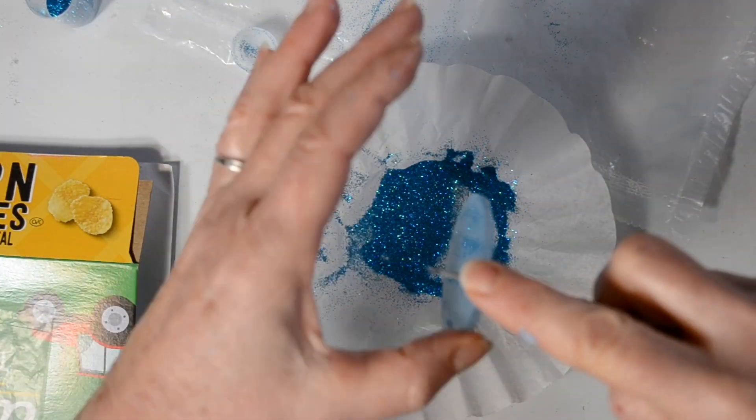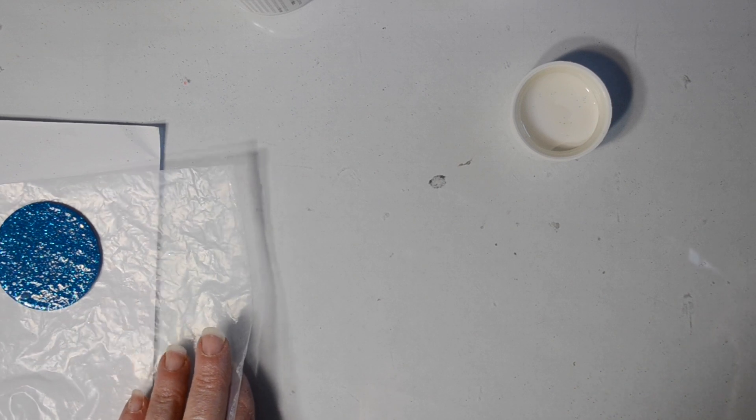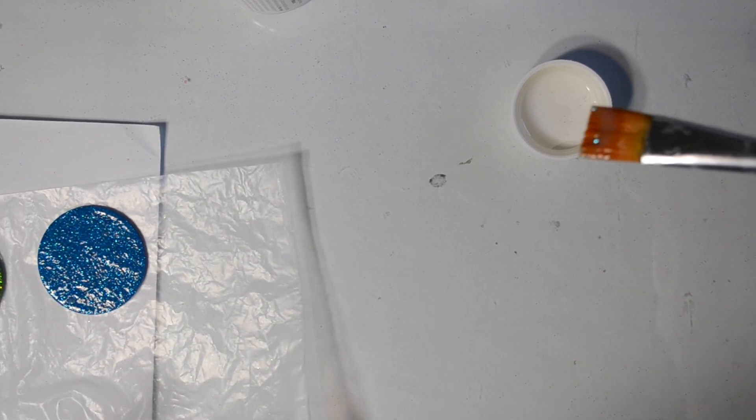So here we go again. This is layer two. More decoupage glue, more chunky glitter. Wipe off the sides and let it dry overnight.